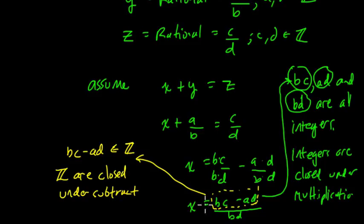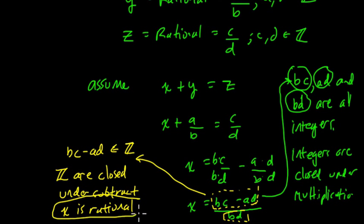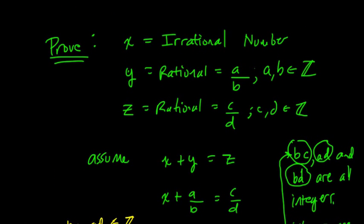So what does this mean? This means that x is rational. Why? Because we have this numerator, which is an integer, a denominator, which is an integer, and the ratio of two integers is a rational number. So here, the ratio of these two integers must be a rational number. In other words, x must be rational. So our original assumption that x is irrational, and the sum of an irrational and rational number is rational, must be wrong. Therefore, the sum of an irrational and rational number must be irrational.